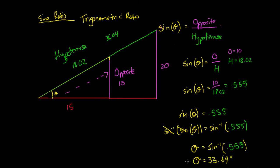When you're calculating this, a common error is having your calculator in radians mode. You need to change your calculator to degrees mode. If your calculator is not in degrees mode, it's going to give you a completely different answer, so just make sure it's in degrees mode.